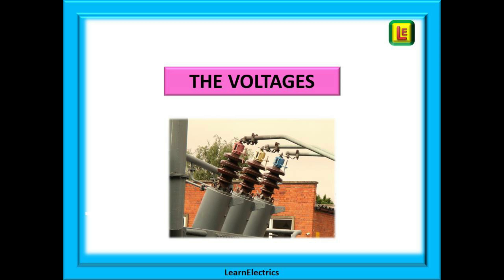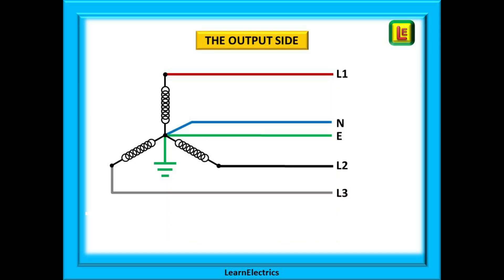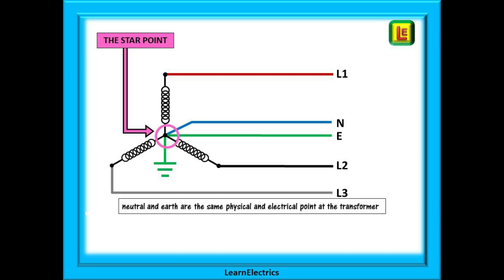We can look now at the voltages on the output side. We will only show the secondary side of the transformer now, the output side, since this is the part that is of most interest to us. These are the cables that go to the houses, the shops and the factories. Notice that all three windings and the neutral and the earth are all connected at the same point. This is called the star point, the common point. And it is here that the neutral and earth are electrically and physically the same point.